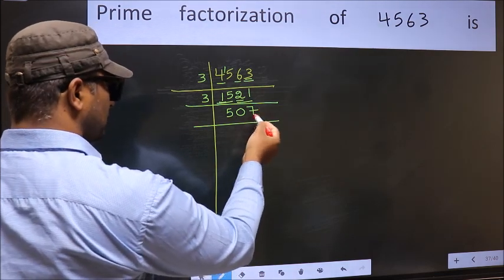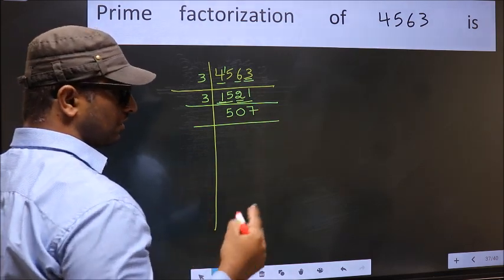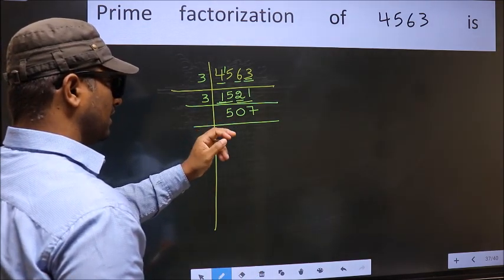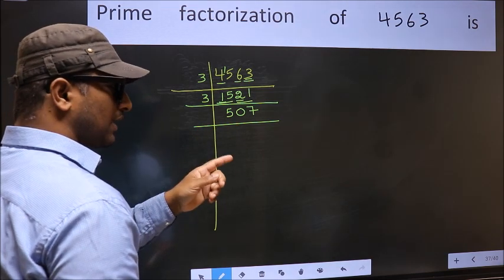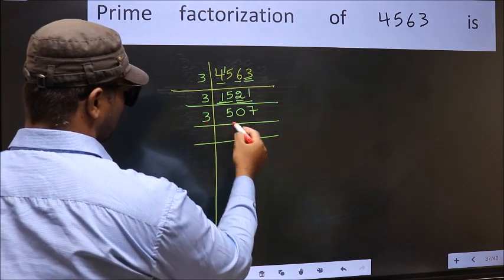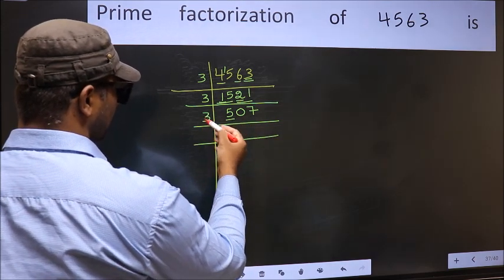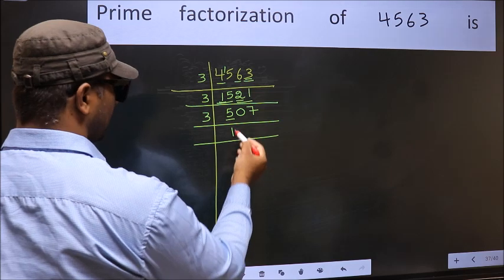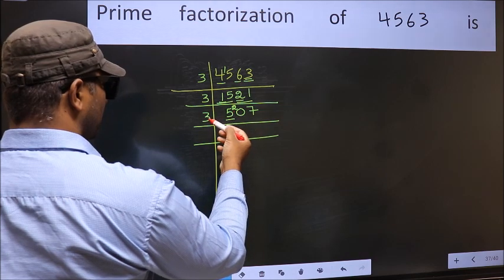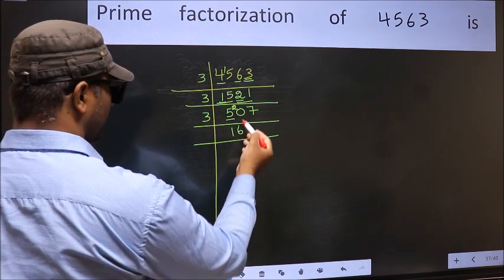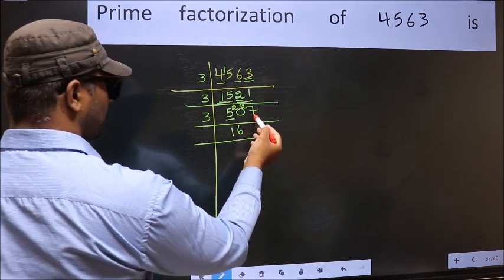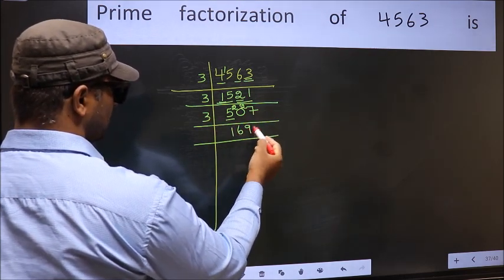To check whether it is divisible by 3 or not, add the digits. 5 plus 0 plus 7 equals 12, and 12 is divisible by 3. So take 3 here. First number 5. A number close to 5 in the 3 table is 3 times 1 is 3. 5 minus 3 is 2, 2 carried forward, 20. A number close to 20 in the 3 table is 3 times 6 is 18. 20 minus 18 is 2, 2 carried forward, 27. When do we get 27 in the 3 table? 3 times 9 is 27.